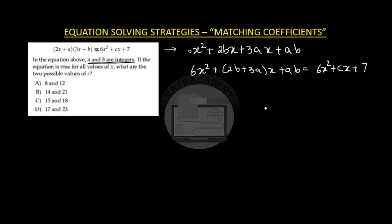And what I will try to do? I will try to find the values of a and b by comparing the coefficient. So I say okay ab should be 7 and 2b plus 3a should be equal to c.